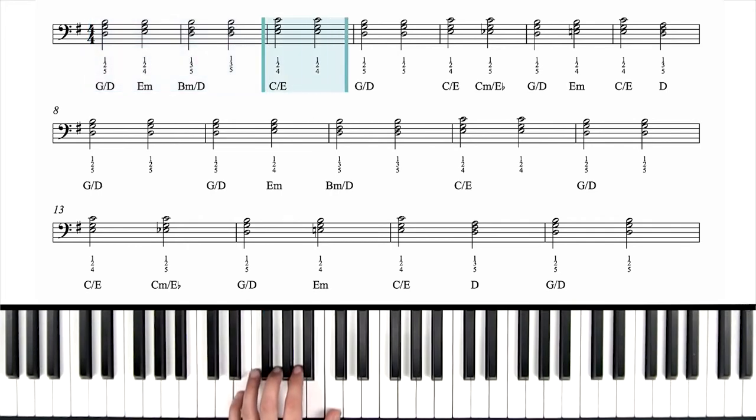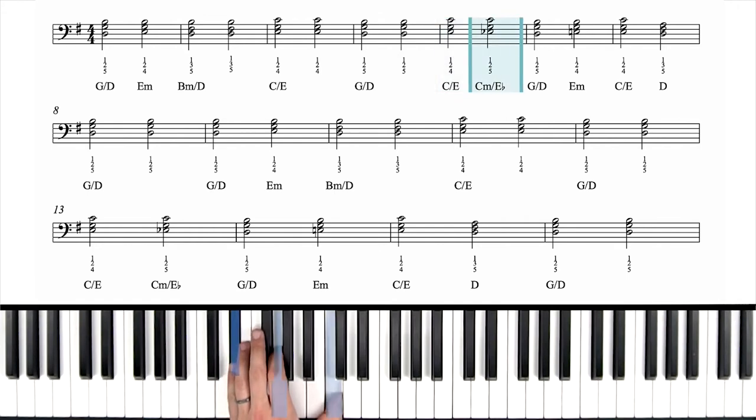Next chord is C over E. We'll do that one two times as well. Then we're back to our G over D. Next we have C over E again, but just for one half note. Then we go to C minor over E flat. So we're dropping that bottom E down by a half step. Next we have G over D again. E minor again. C over E again. We're starting to see some repeated chords, which is good.